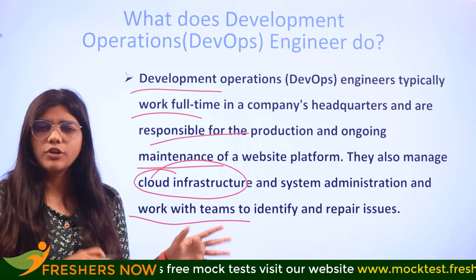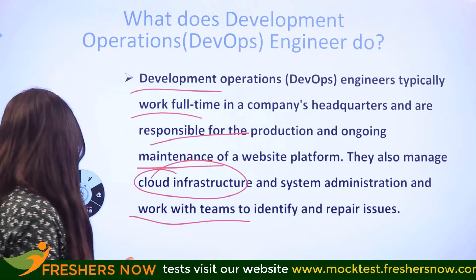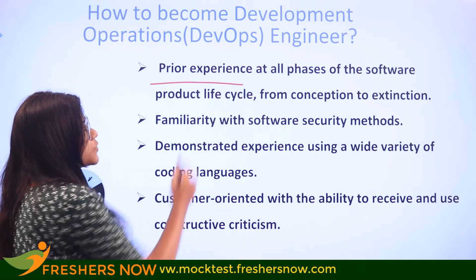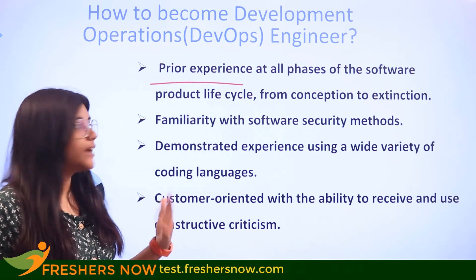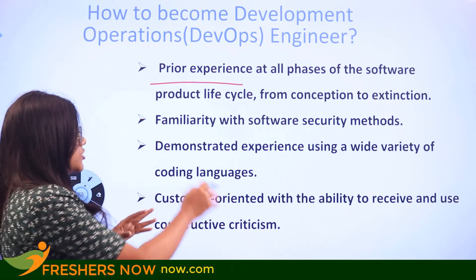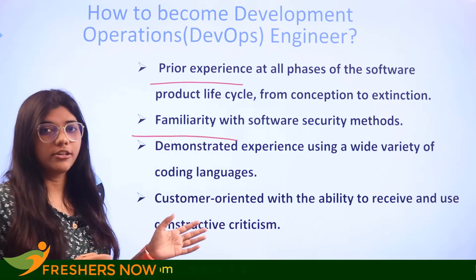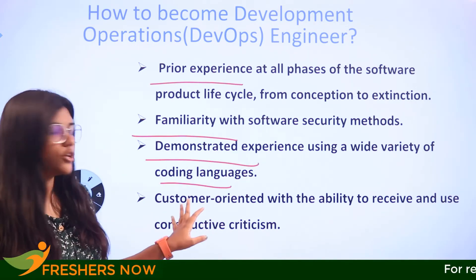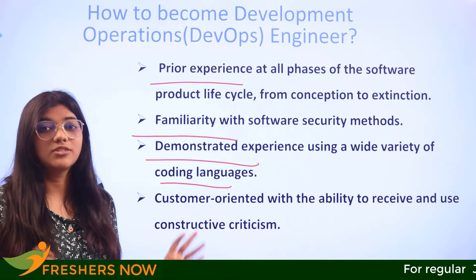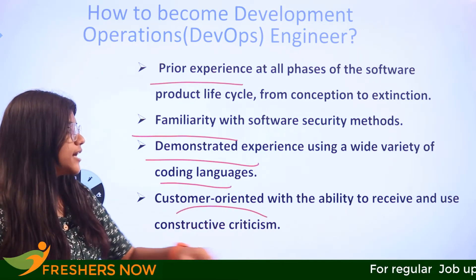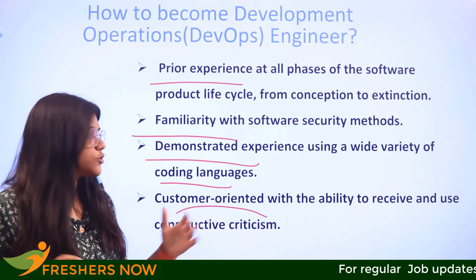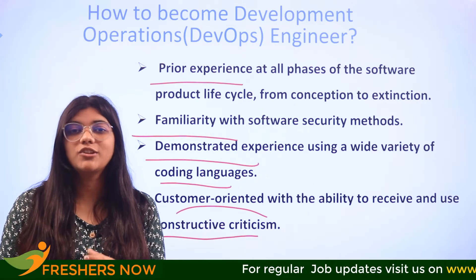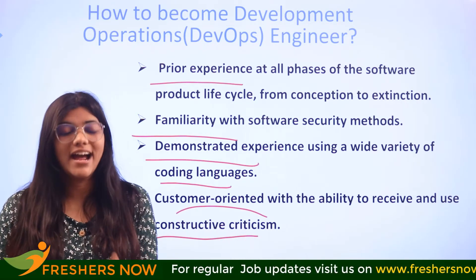If you're wondering how you can become a DevOps engineer, consider these elements alongside the skills: having prior experience with all phases of the software product life cycle from conception to completion, being familiar with software security methods, demonstrated experience using a wide variety of coding languages, being customer-oriented, and having the ability to receive and understand constructive criticism with a positive attitude.